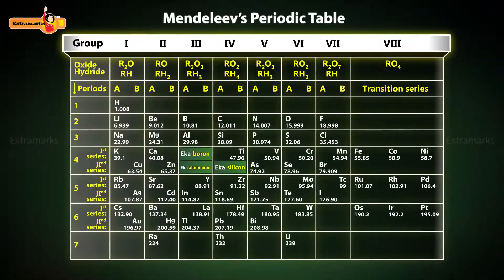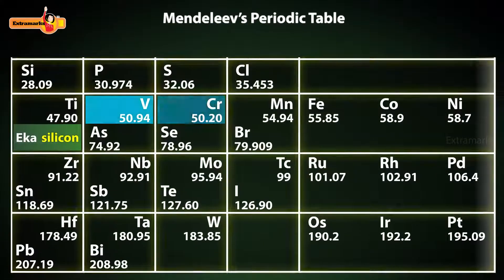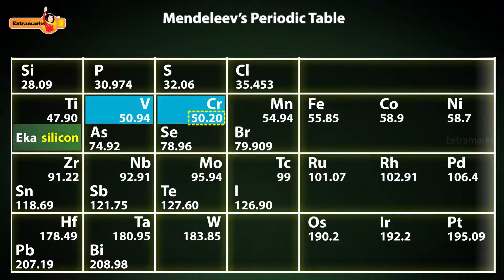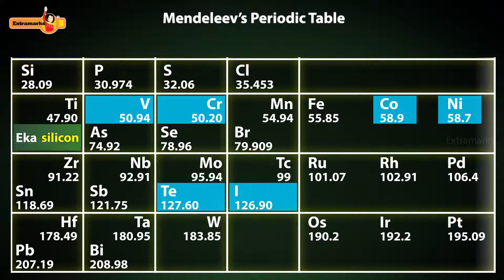Take a look at the position of vanadium and chromium in the periodic table. Have you noticed something unusual from what he stated? Few elements of higher atomic mass are placed before lower atomic mass elements. It means that he placed few elements of higher atomic mass before an element having lower atomic mass in order to adjust elements having similar properties.